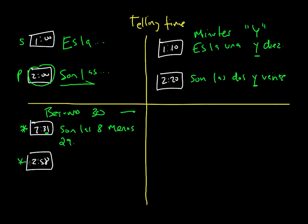2:58: so in two minutes it's going to be 3 o'clock, so we would say 'son las tres menos dos.' So if you want to express time after the 30-minute mark, use the subtraction method.